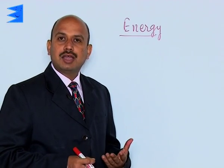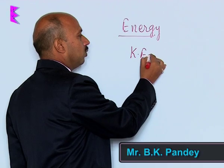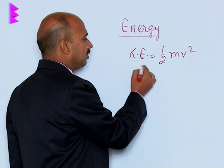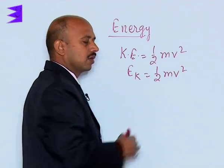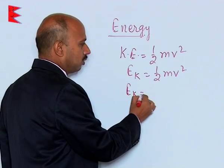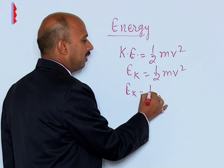We will do the relation between kinetic energy and linear momentum. We know kinetic energy is equal to half mv square, where we can write the symbol Ek for the kinetic energy, half mv square. And here we can also write Ek is equal to half if we multiply by mass and divide by mass.